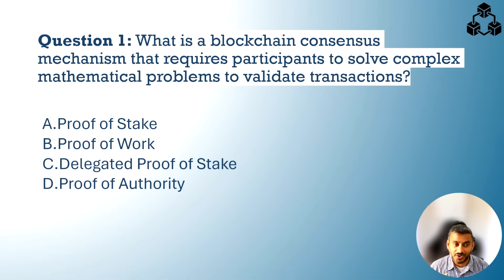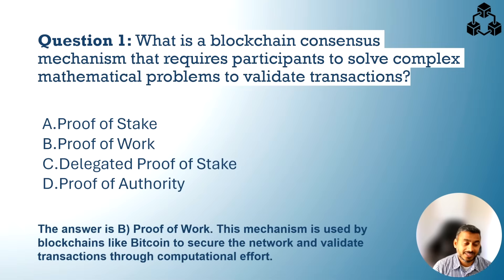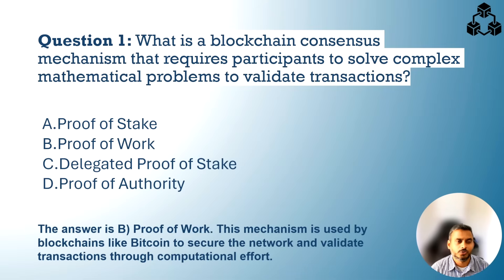The answer is B. Proof of Work. This mechanism is used by blockchains like Bitcoin to secure the network and validate transactions through computational effort.